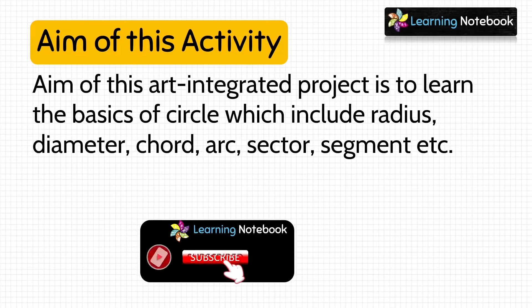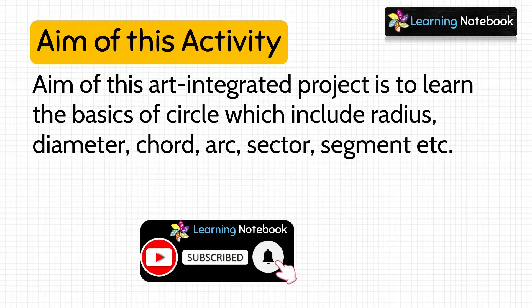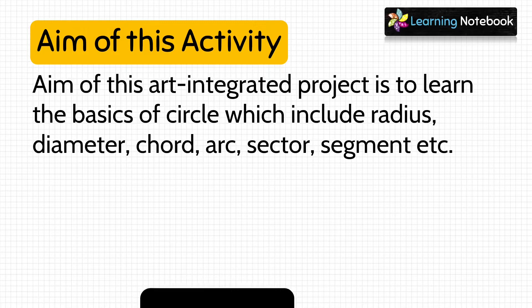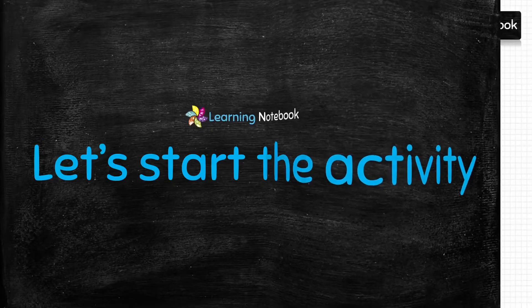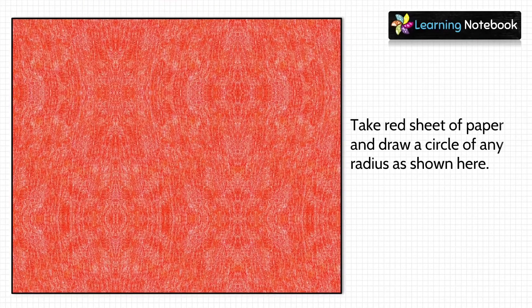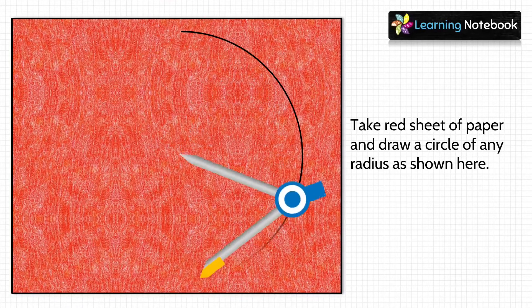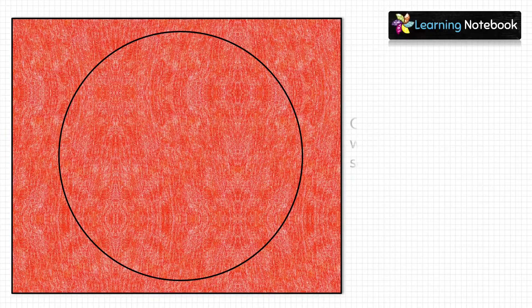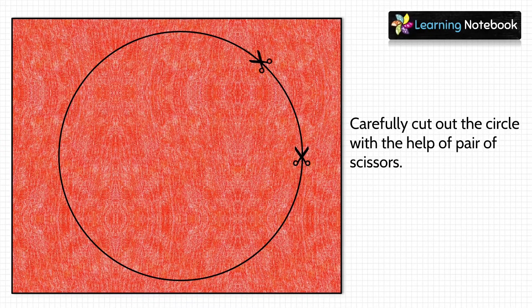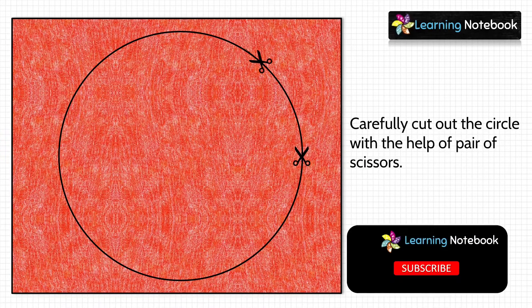If you have not yet subscribed to our channel Learning Notebook, do subscribe and make sure to press the bell icon. Now we will start with our activity. In the first step, we will take one red sheet of paper, draw a circle of any radius on it, and then carefully cut out this circle using a pair of scissors.